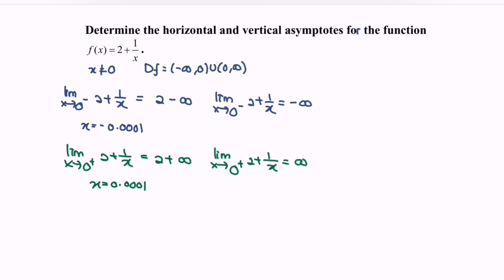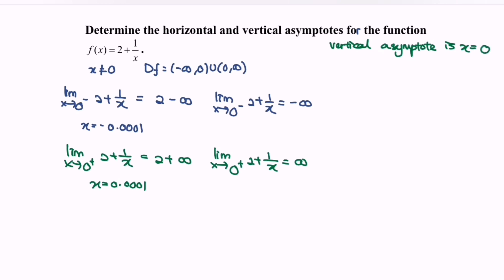So from here, the vertical asymptote is x equals to 0.